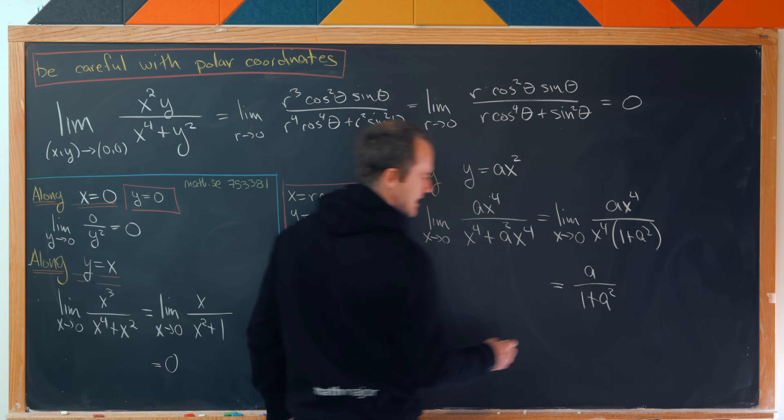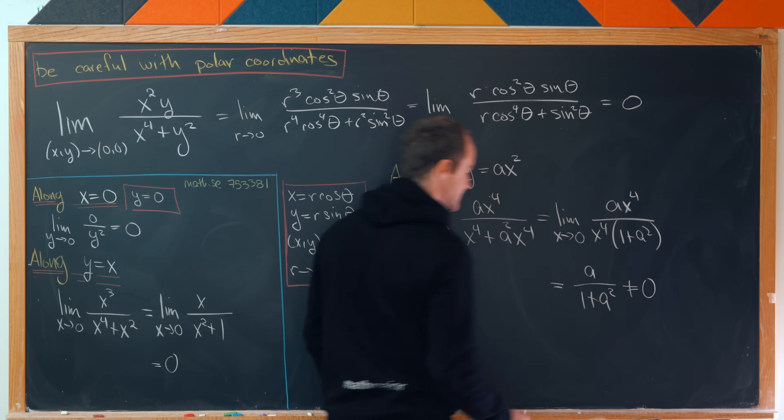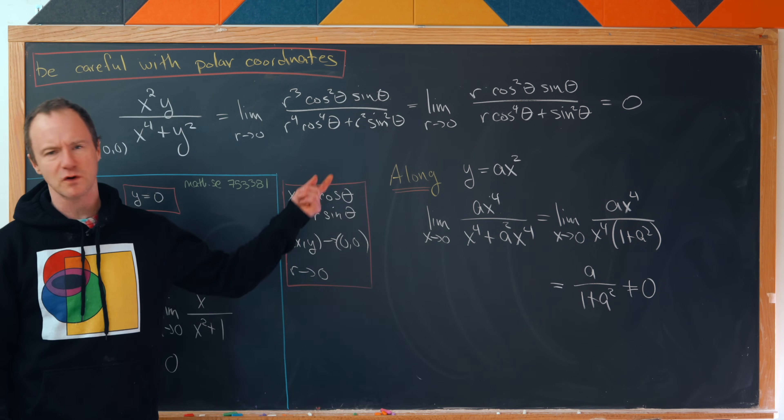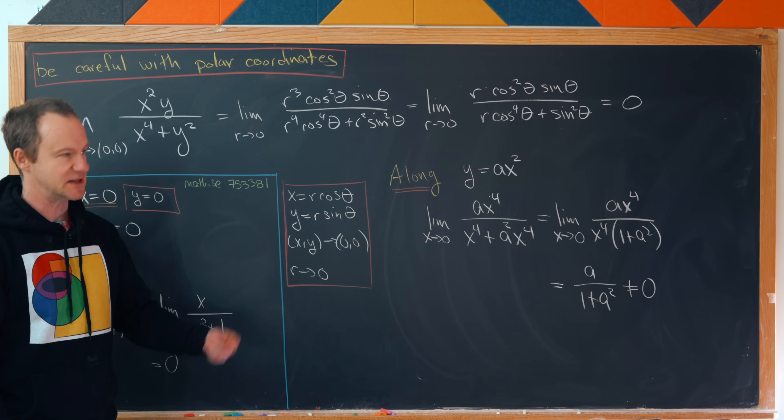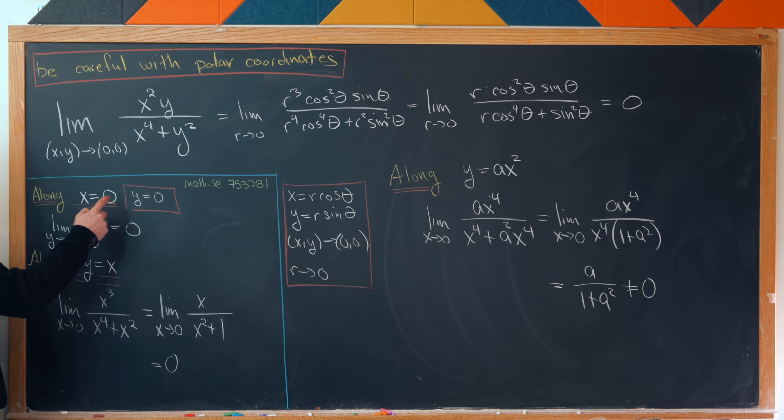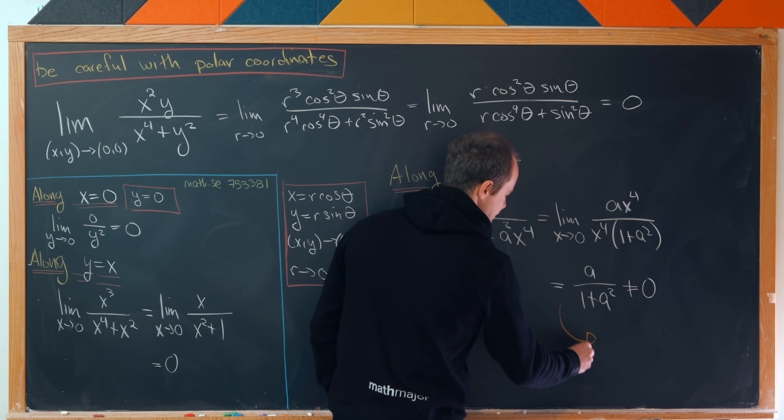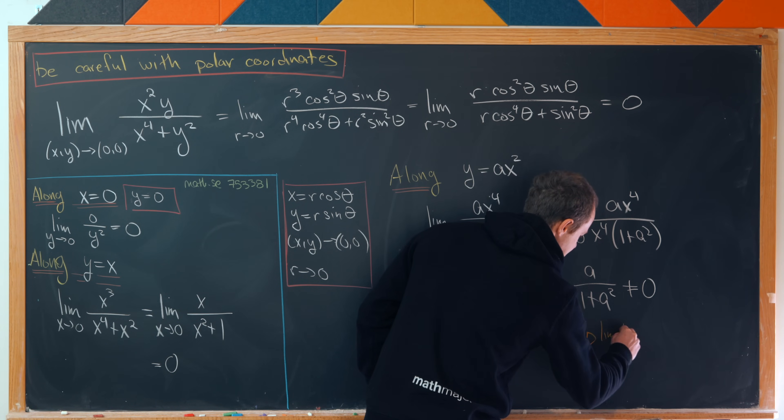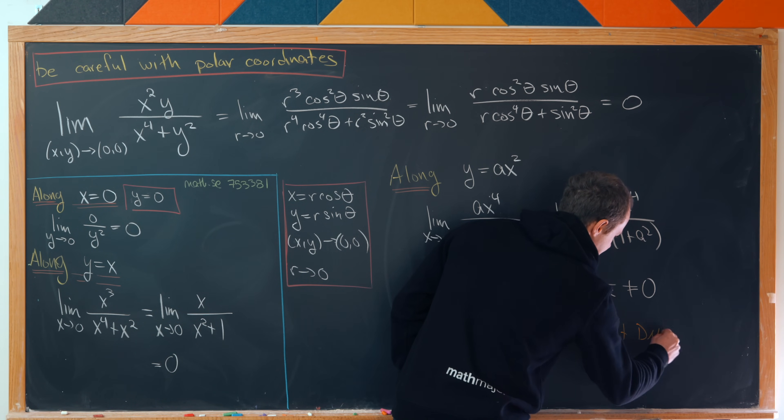But notice that this is not equal to zero. Well, most of the time it's not equal to zero. Of course, if a is equal to zero that is equal to zero, but that's not super interesting. That would just be this case right here. So this data gives us motivation to say that the limit does not exist.